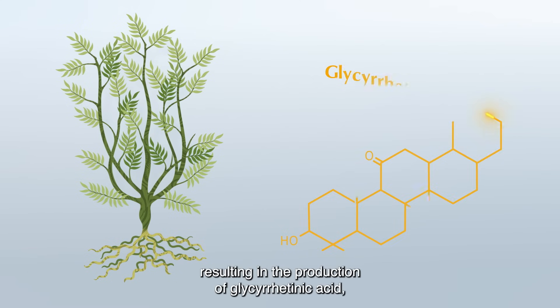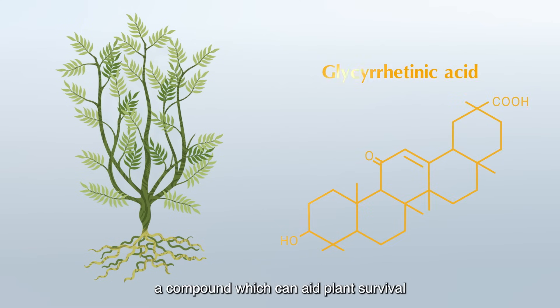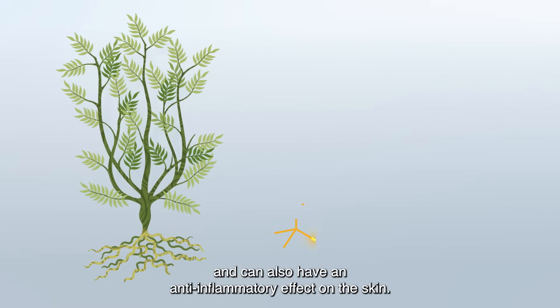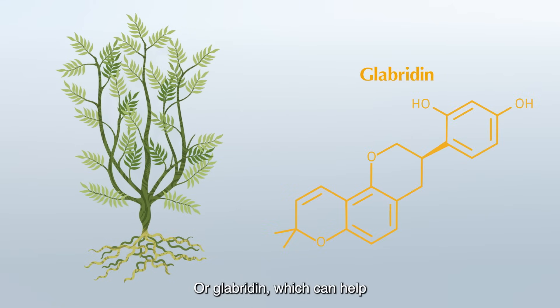resulting in the production of glycyrrhizic acid, a compound which can aid plant survival and can also have anti-inflammatory effects on the skin, or glabridin, which can help protect both the licorice plant and skin alike from environmental stressors.